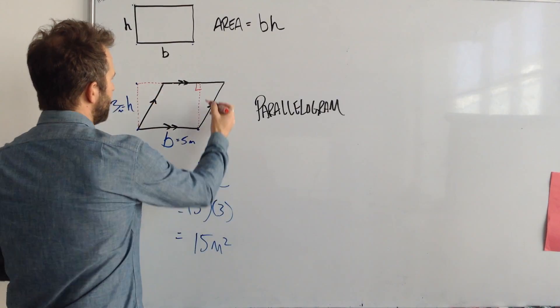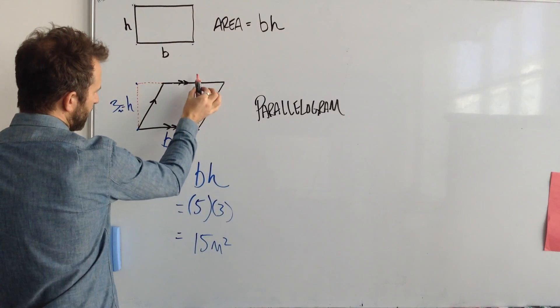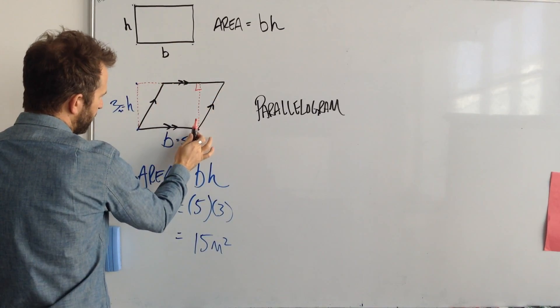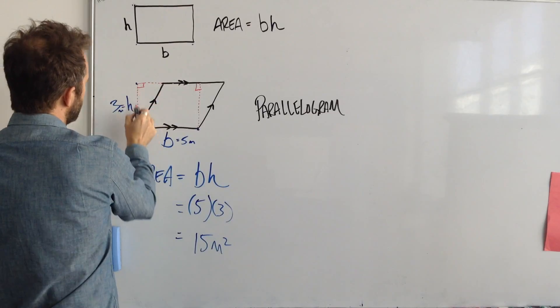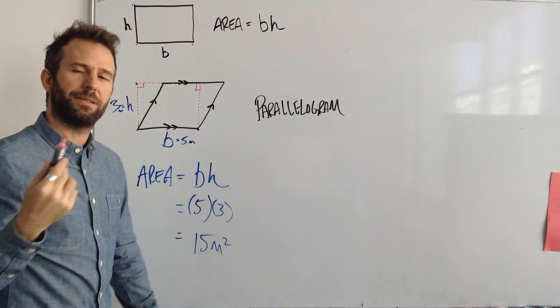You'll notice that I indicated here there's a right angle and it's coming down straight from the top to this vertex. You could also use the height on the outside here that I indicated.